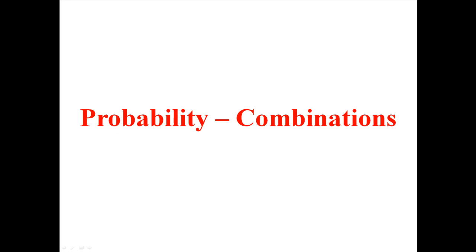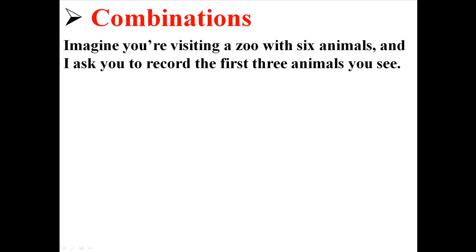Now in my last lecture, I talked about permutations. Now I'm going to start talking about combinations. So again, imagine you're visiting a zoo that only has six animals, and I ask you to record the first three animals that you see.